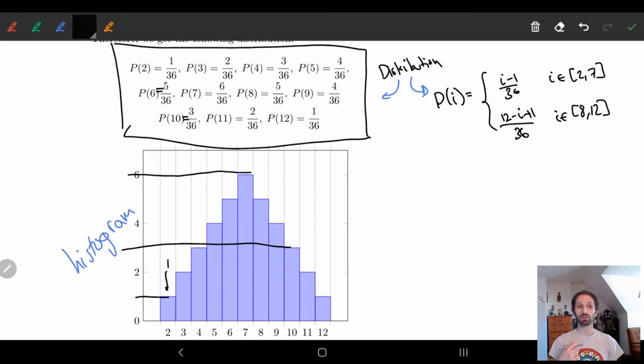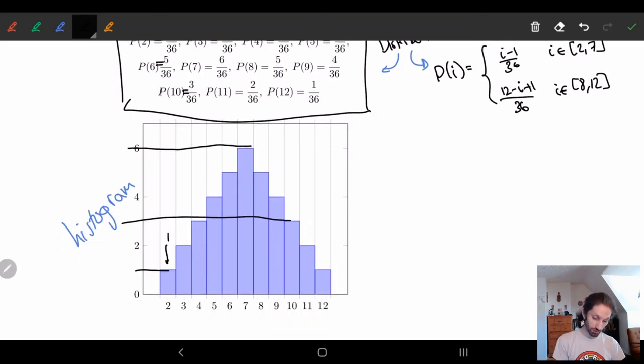And so this histogram basically allows us to quickly see what the distribution is. And this is where the term distribution is coming from. We're trying to see how the different things are distributed over all outcomes. And here, when we look at all outcomes, these are all the outcomes, I can literally see how it's distributed. It looks like a big triangle.